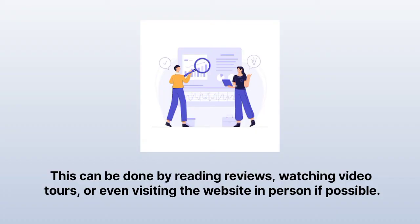Step three: conduct online research. Now that you have a list of your key competitors and their websites, it's time to do some more in-depth research. This can be done by reading reviews, watching video tours, or even visiting the website in person if possible. Make sure to take notes on what you like and don't like about each site.